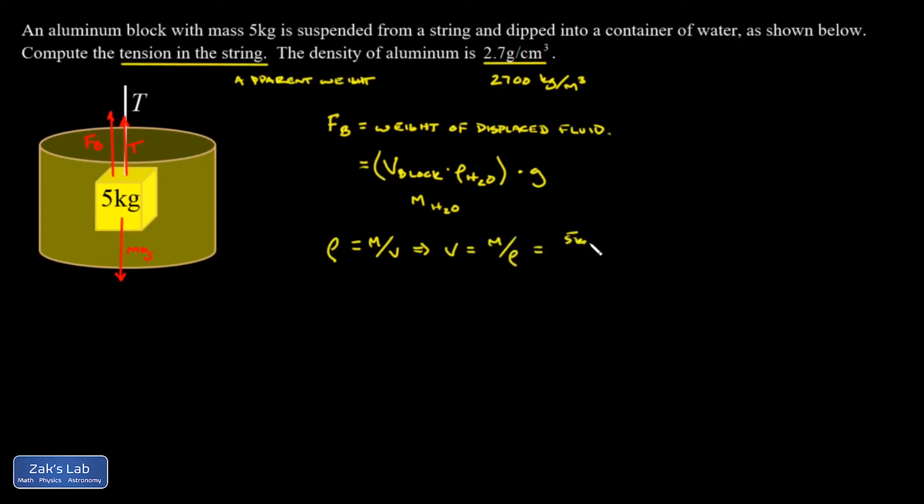That's five kilograms over 2700 kilograms per cubic meter, and that comes out to 0.00185 cubic meters.